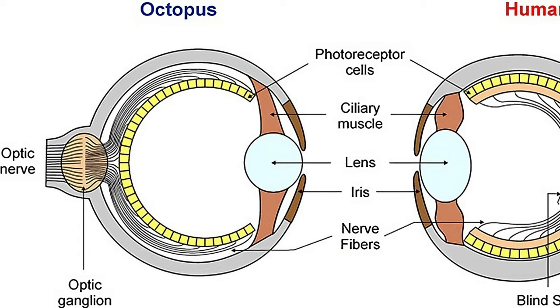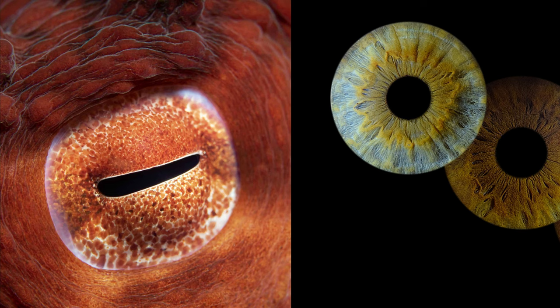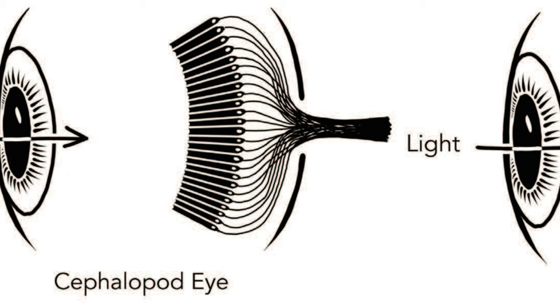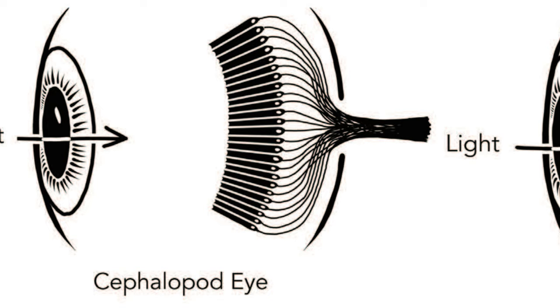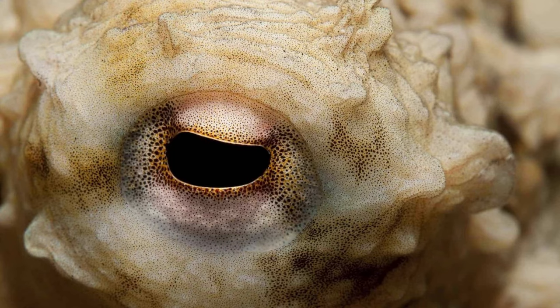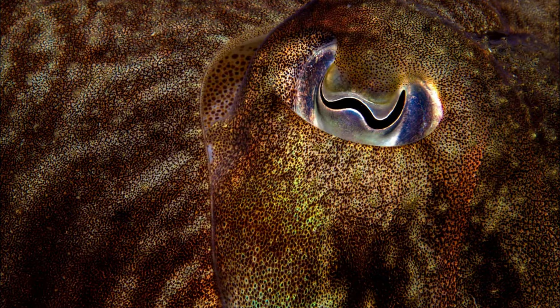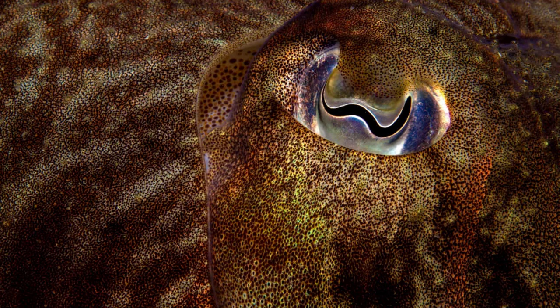Both eyes have a lens, a ciliary muscle, a semi-sphere of photoreceptor cells, and both even have a colored iris. The biggest difference in structure between the two eyes is that the nerve fibers run behind the photoreceptor cells in the cephalopod eye, meaning that they do not have the blind spot vertebrates do, and they also lack the bipolar cells found in vertebrate eyes, likely due to the neurology related to the retina structure in cephalopods. However, the cephalopod eye has undergone some specialization.